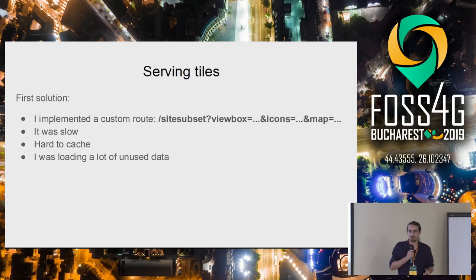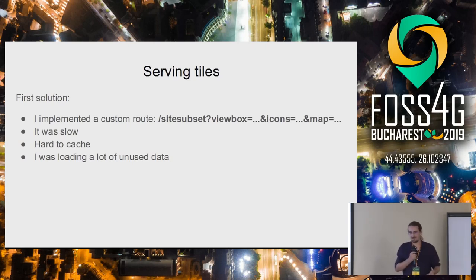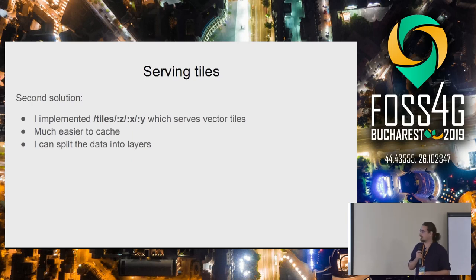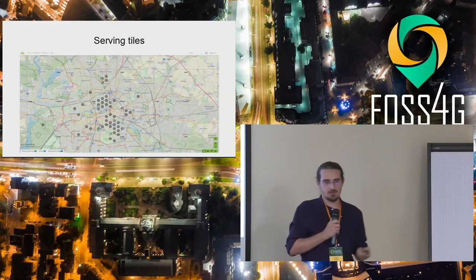Another problem I had was with serving the tiles. My initial solution was to add a custom route with a view box argument and return all sites in that view box, but this was very slow because sometimes I returned maybe the whole database. It was also hard to cache because it's unlikely the user will have the same view box twice, and I was loading a lot of unused data. I came up with a second solution using vector tiles, which were much easier to cache, and I was able to split the data into layers — sites on one layer and groups on another where I only store the counter.